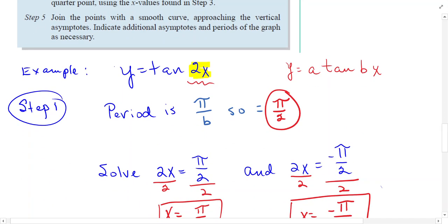Here's our example: y equals tan 2x. The period is pi over b. b in this case is 2, so the period is pi over 2.